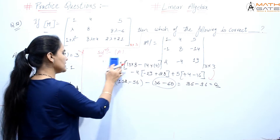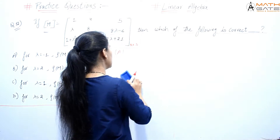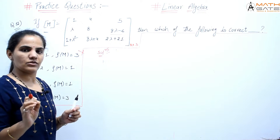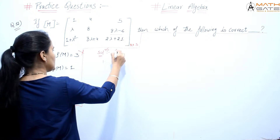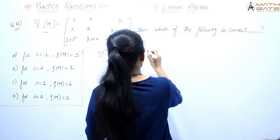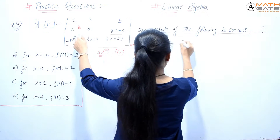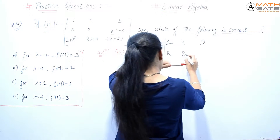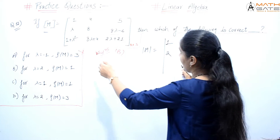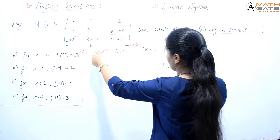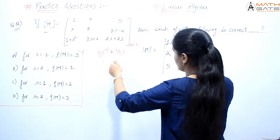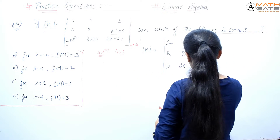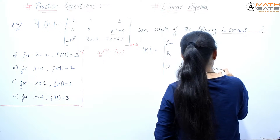Now let's check option B, where lambda equals 2. Substituting λ=2: the first row is [1, 4, 5], then 2, 8, and 16−6=10; then 1+4=5, 16+4=20, and 4+21=25. Wait — more carefully: row 2 is [2, 8, 16−6=10], and row 3 is [1+4=5, 16+4=20, 4+21=25]. The matrix becomes [1, 4, 5; 2, 8, 10; 5, 20, 25]. This is a 3x3 matrix.